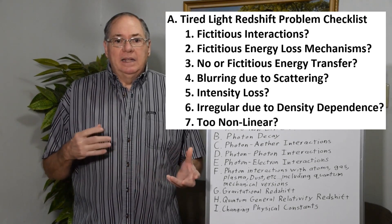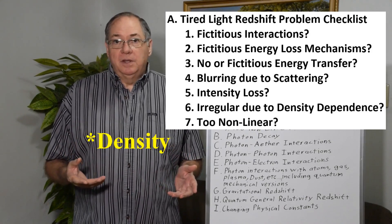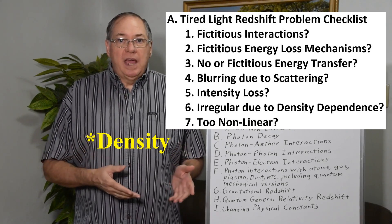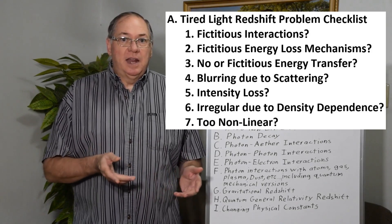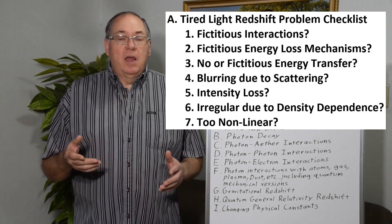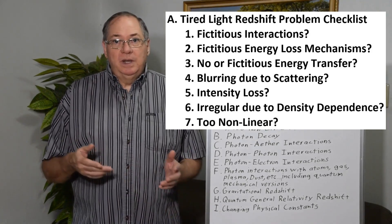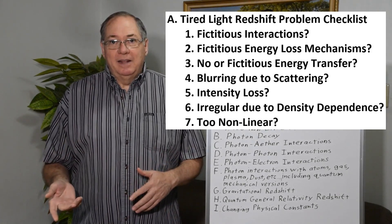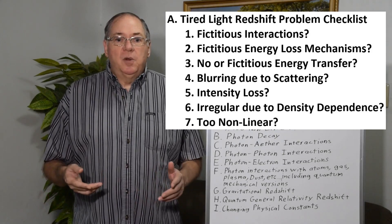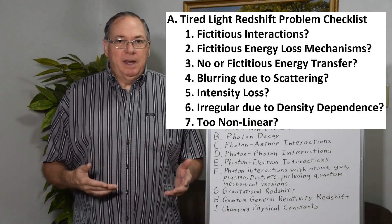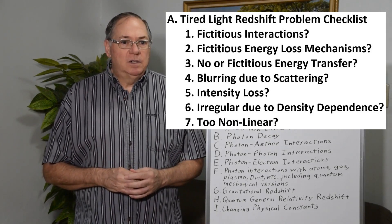And so this also creates a density dependence because you would have more scattering in areas where there's galaxies or galactic clusters and less scattering in voids, or even redshift in general, less redshift in voids, more in galaxies and galactic cluster regions. So density dependence is a big problem and not just with the expanding universe model.